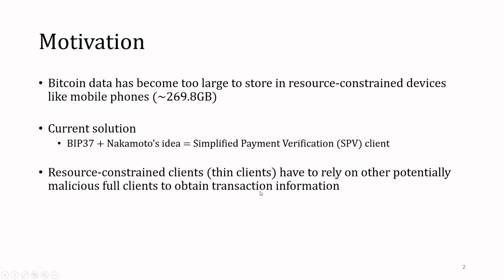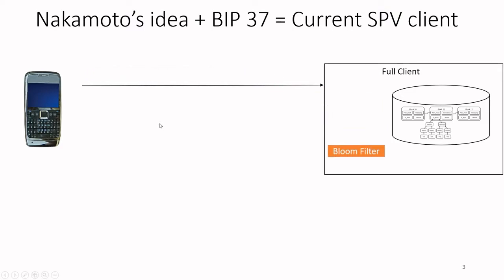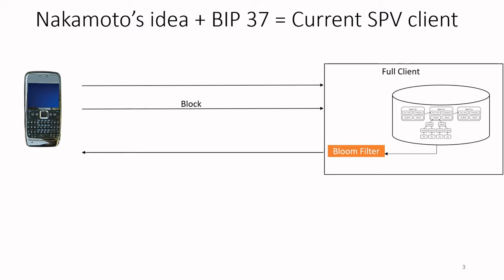In this setting, the thin client or resource-constrained client has to rely on other full clients for fetching transaction information and data. Today's solution relies on the use of Bloom filters. When a thin client wants to fetch some data from the full client, it first loads all the addresses and transactions of interest into the Bloom filter. The filter is then sent in plain to the full client, which scans data and sends back only transactions and blocks that match the filter, along with the Merkle proof.